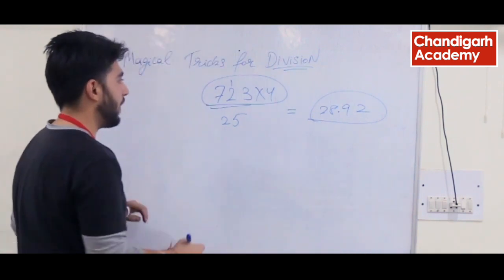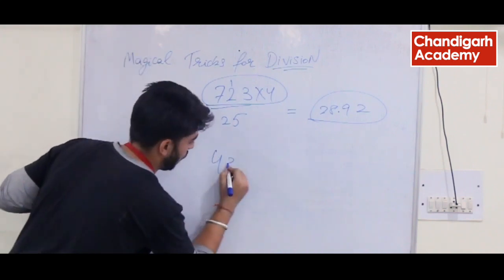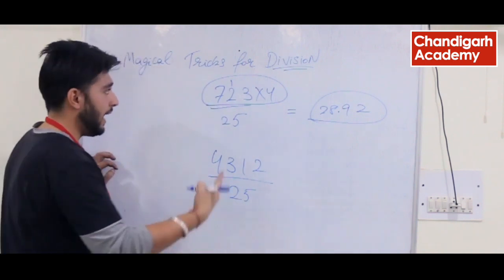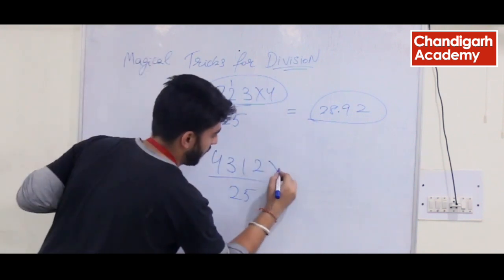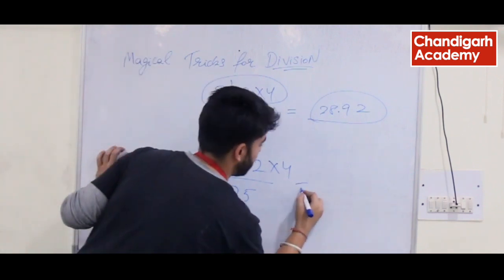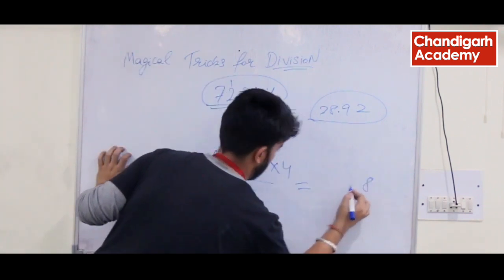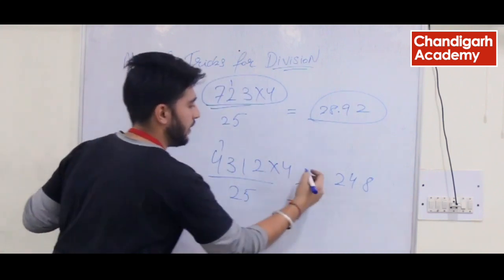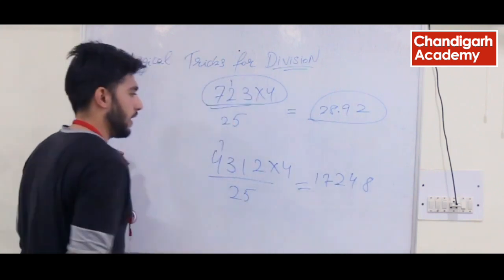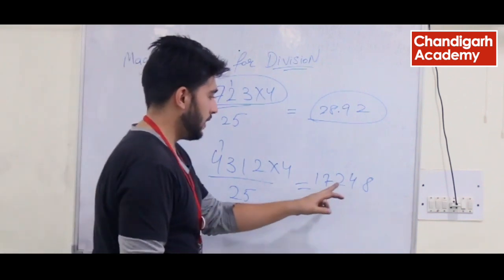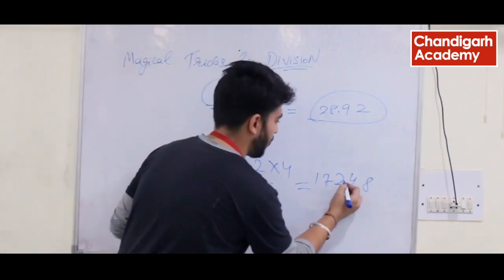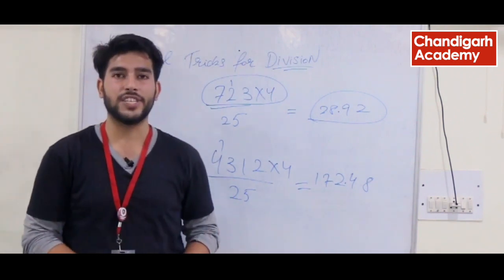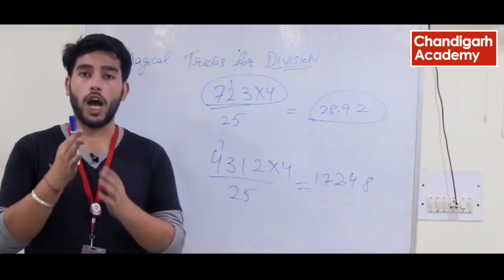Let's take another example: 4312 divided by 25. The first step is to multiply it by 4. So: 4×2 is 8, 4×1 is 4, 4×3 is 12 with carry 1, 4×4 is 16 and 1 is 17. Now leave 2 digits at the end and put a decimal point here. It's that simple — you can try it too!